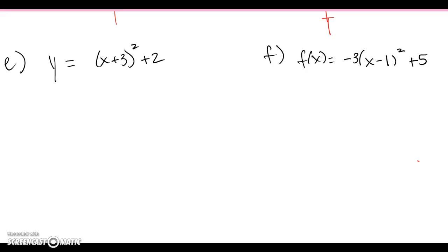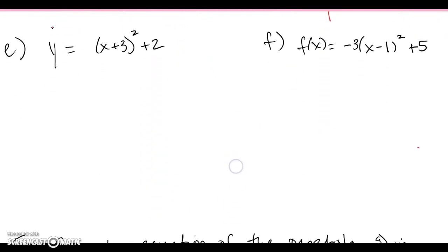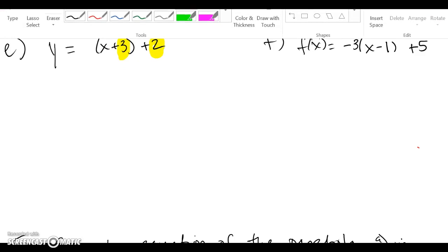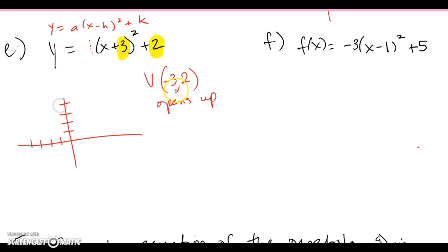Part E looks like the previous examples but has the plus 2 involved as well. Recognizing the vertex form, we can quickly pull off the vertex: the opposite of the inside value gives us h = -3, and k = 2. The leading coefficient is a positive 1, so it opens up. That's all we need to sketch — vertex at (-3, 2) opening upward, a basic parabola width. Once we have the vertex, sketching is straightforward.